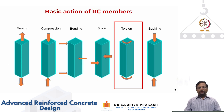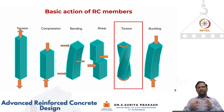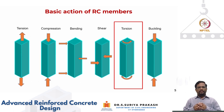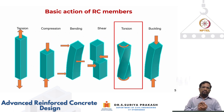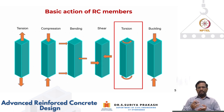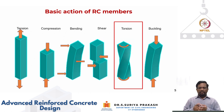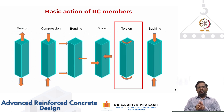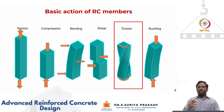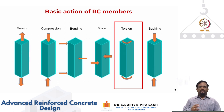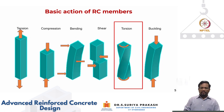In general, the behavior of RC members can be categorized into four basic actions: axial load (compression or tension), bending, shear, and torsion. These are the four basic actions that act on RC members. Stress resultants are six, but loading actions can be categorized into four basic cases, since bending can be about both axes and shear can act in two directions.